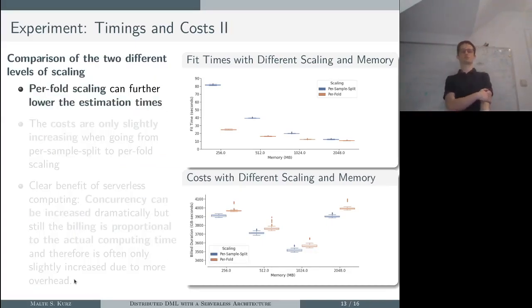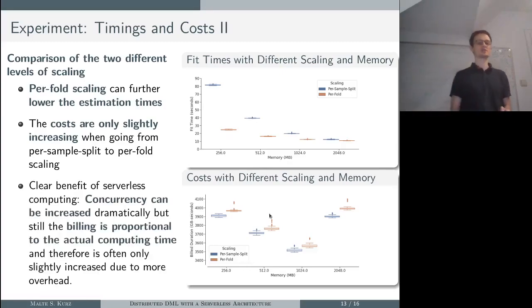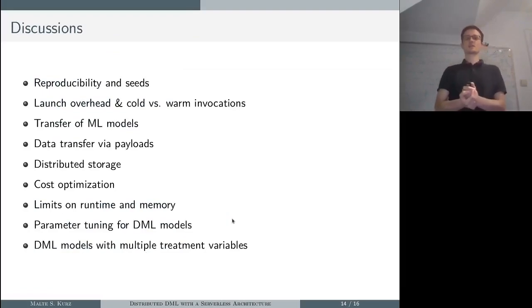If we compare the per fold scaling—the blue mode versus orange mode—we see that per fold scaling allows us to further lower the estimation time, and at the same time the costs are only slightly increasing. What is becoming visible here is a clear benefit of serverless computing: basically you can increase the concurrency a lot, but still the billing is proportional to the actual computing time. So basically we can get a much higher level of parallelism but at only a little increase in costs.